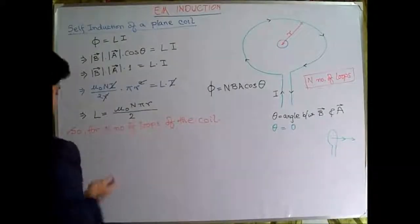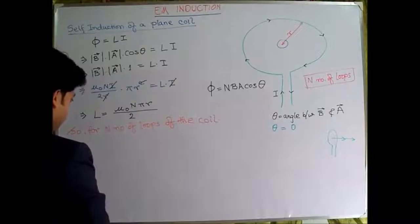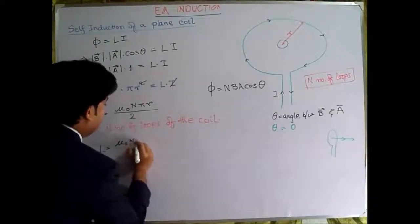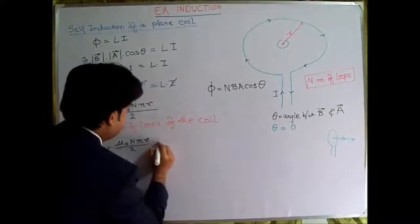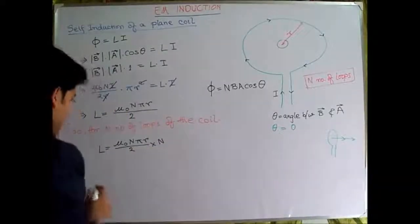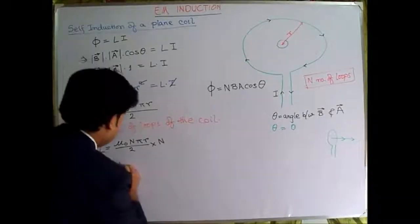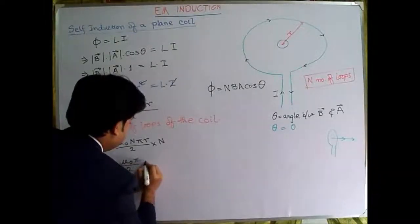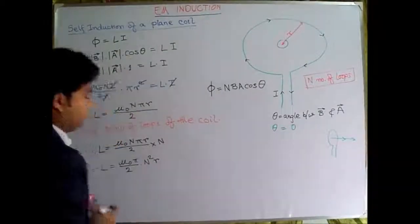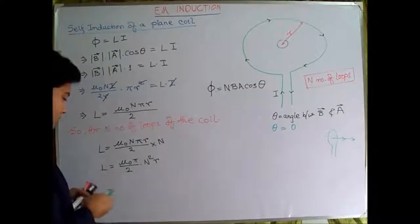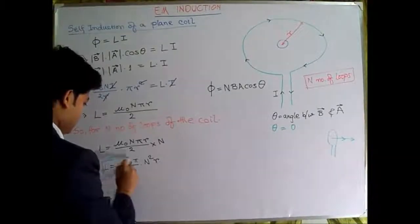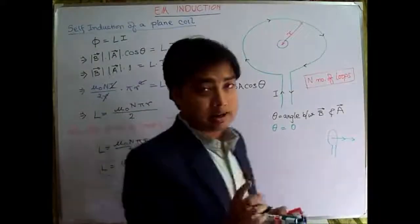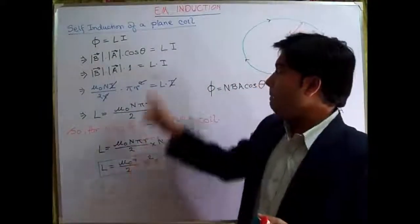Here, this L will be equal to μ₀NπR/2 multiplied by N, so L comes out to be equals to μ₀π/2 multiplied by N²R. So this is the expression for the self inductance of a plane coil.